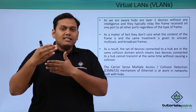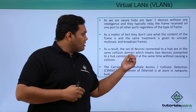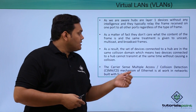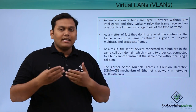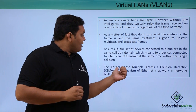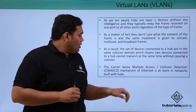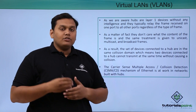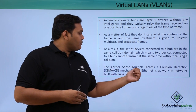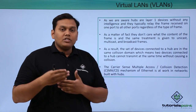As a result, all devices connected to a hub are in the same collision domain, which means two devices cannot transmit data at the same time. This is governed by CSMA/CD — Carrier Sense Multiple Access with Collision Detection — which is a mechanism of Ethernet that operates when a collision occurs on the network.